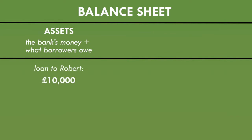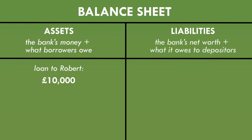The other half of the balance sheet is called the liabilities — a record of everything the bank owes to other people. Here you'll find money the bank has borrowed from other banks or large pension funds, and all the customers' accounts, because the balance of your account is just a number showing what the bank promises to pay you when you ask for your money back. When Robert signed the contract, he did it because he wanted some money from the bank. So the bank creates a new account for Robert, links it to his debit card, and just types £10,000 into their computer records. This £10,000 is a liability from the bank to Robert and shows up on the other half of the balance sheet.